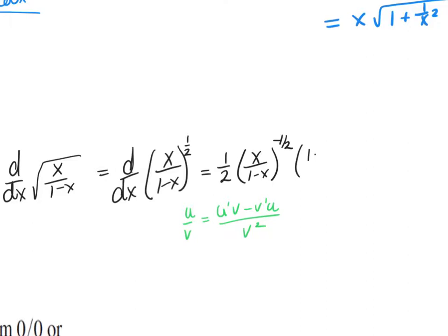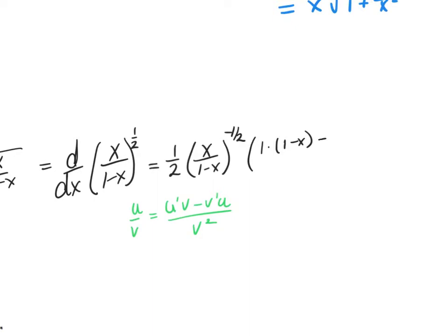Here's the quotient rule for the inside: the derivative of the numerator, which is 1, multiplied by the denominator (1−x), minus the derivative of the denominator — because it's negative x, the derivative is negative 1 — multiplied by the numerator x. All over the denominator (1−x) squared.